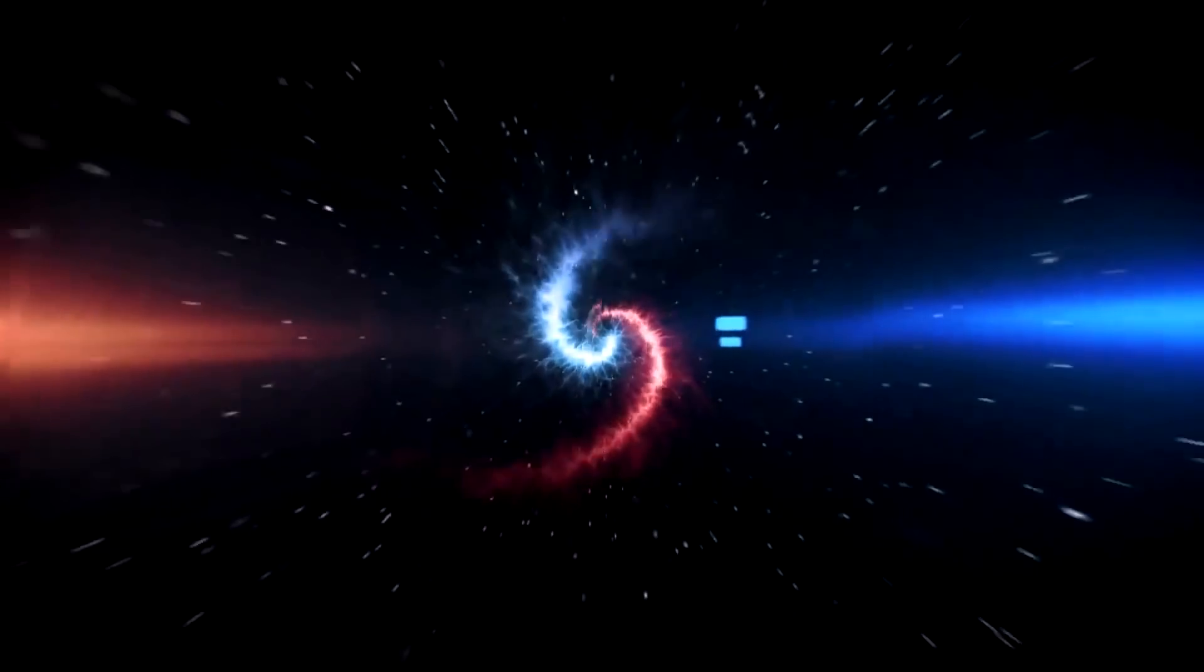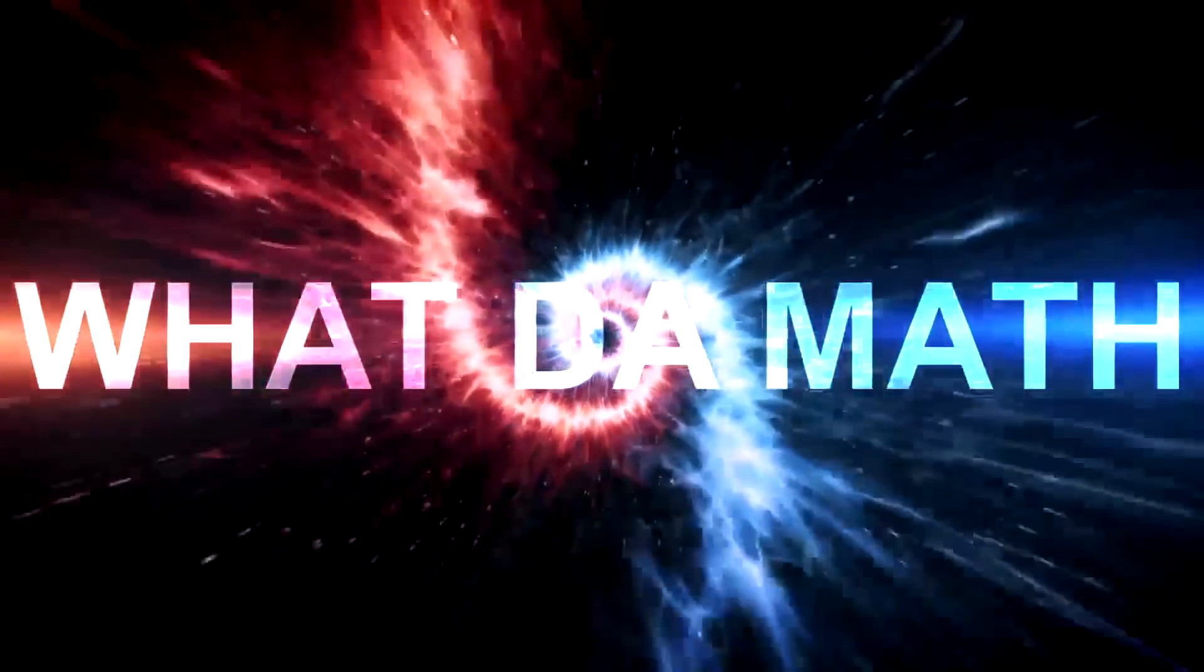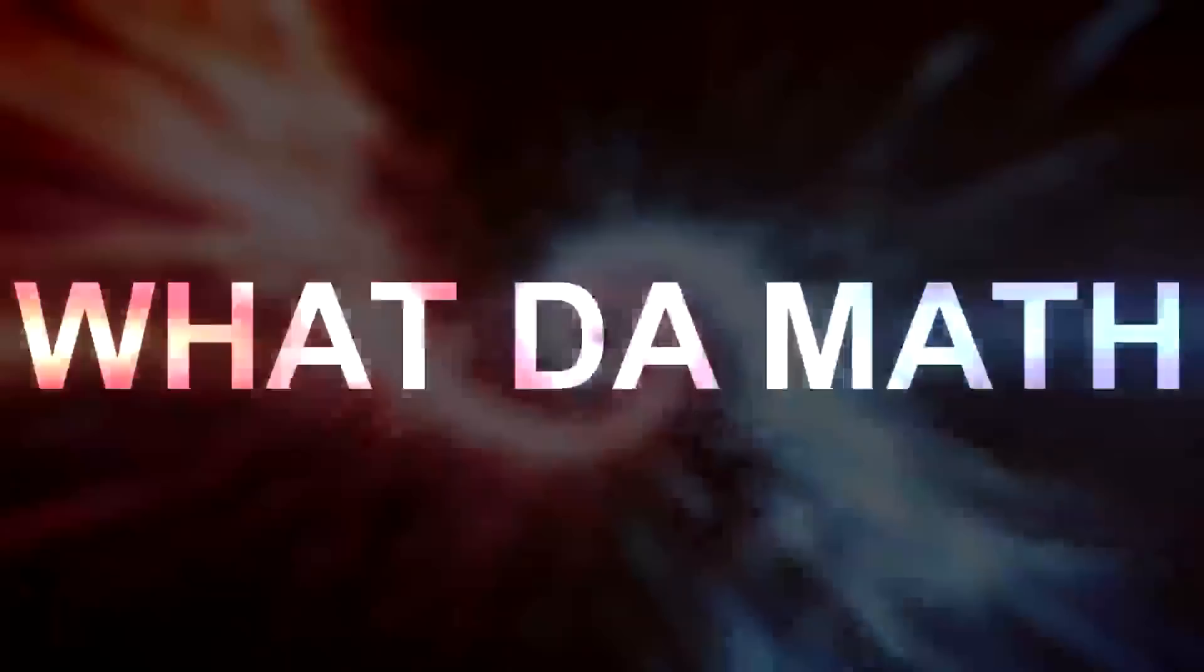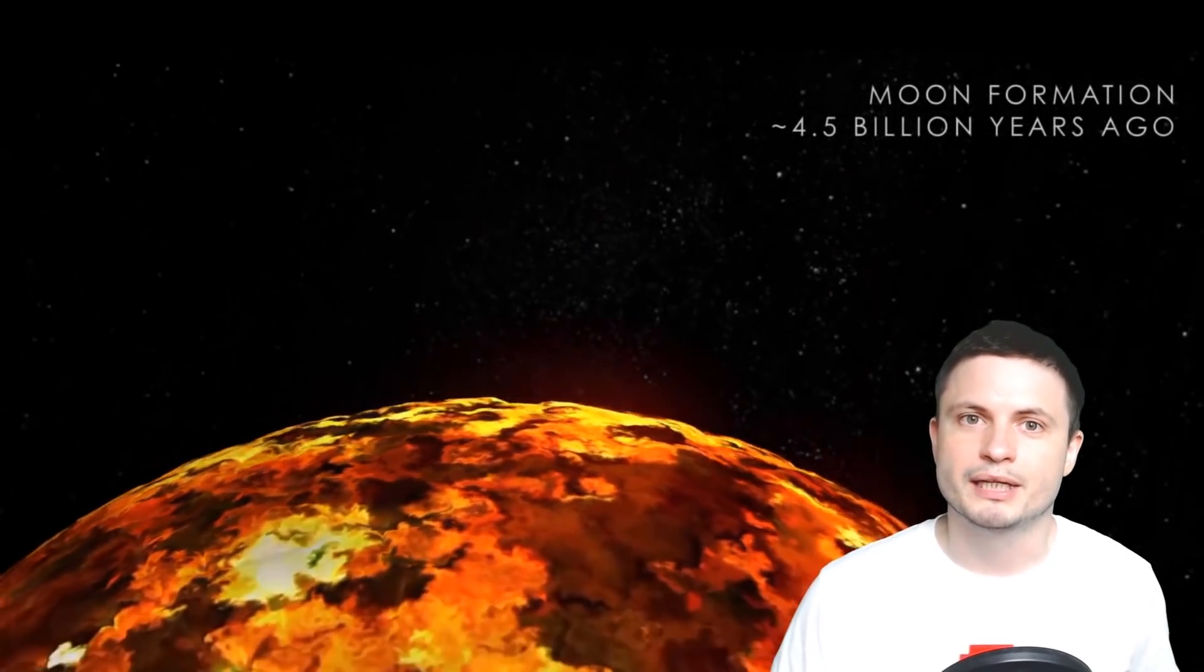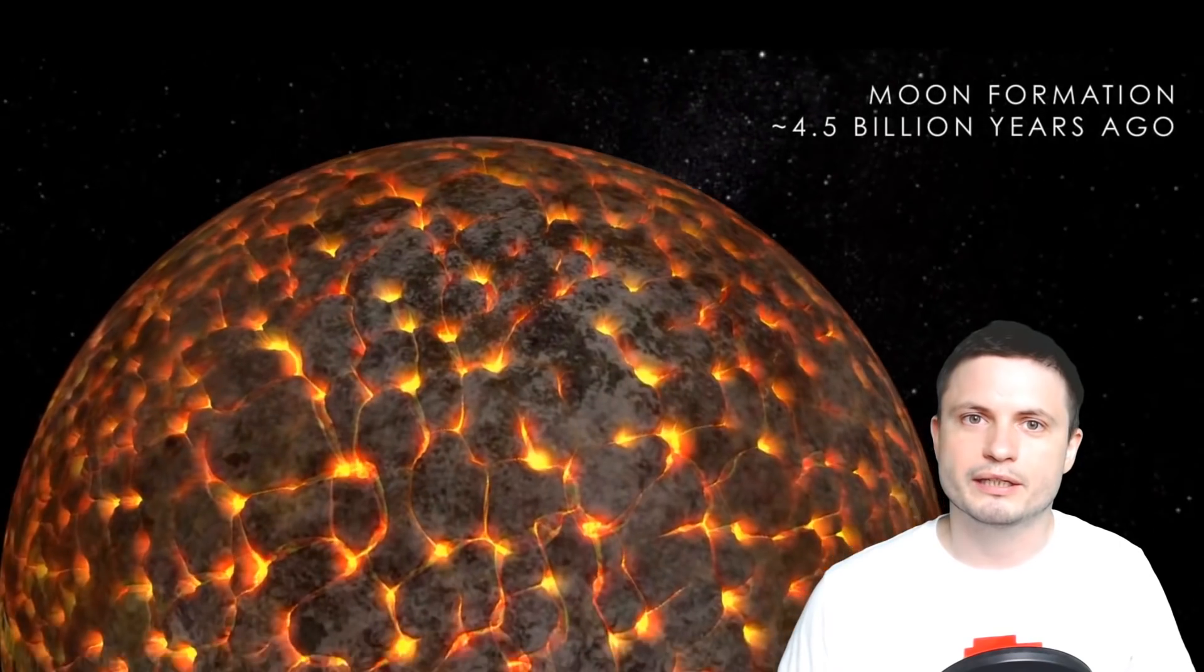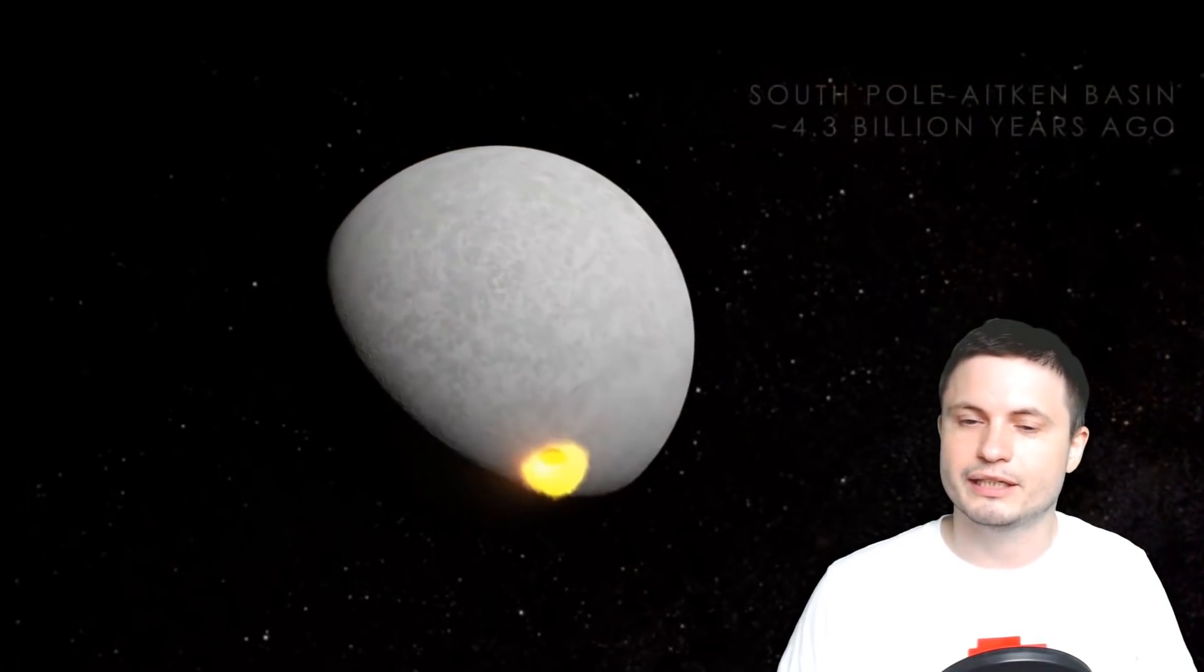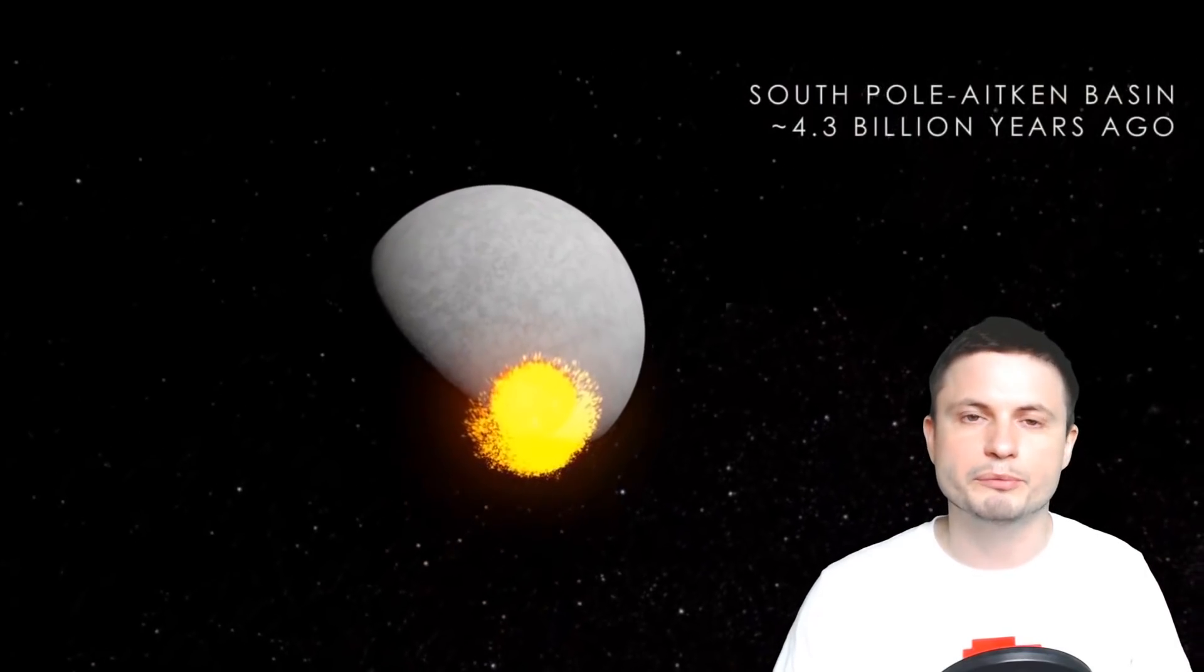Welcome to What the Math. Our story starts in the early solar system, basically 4.5 billion years ago. This is when the entire solar system was still very active, there was a lot of stuff going on, a lot of things collided with each other.